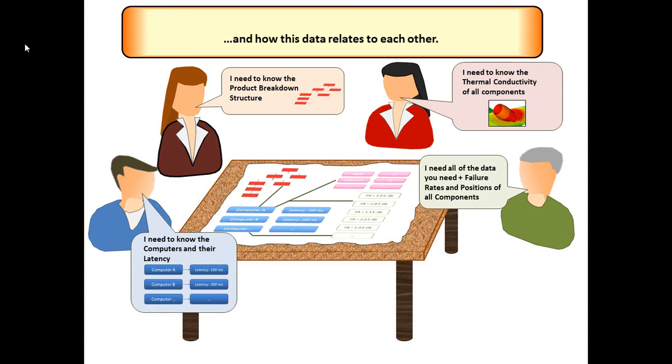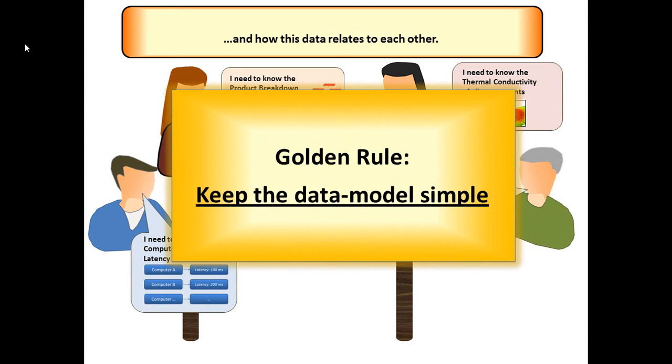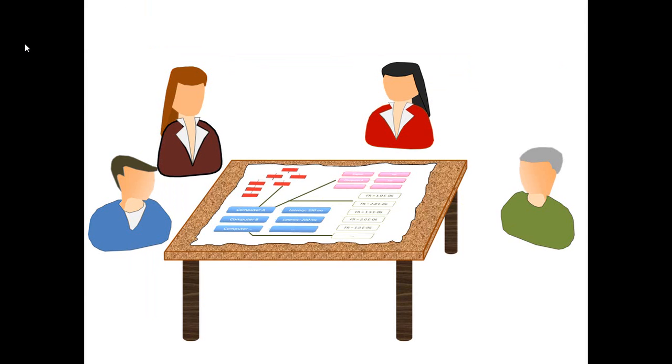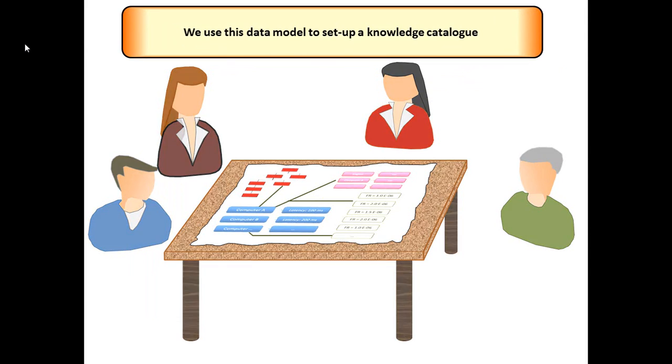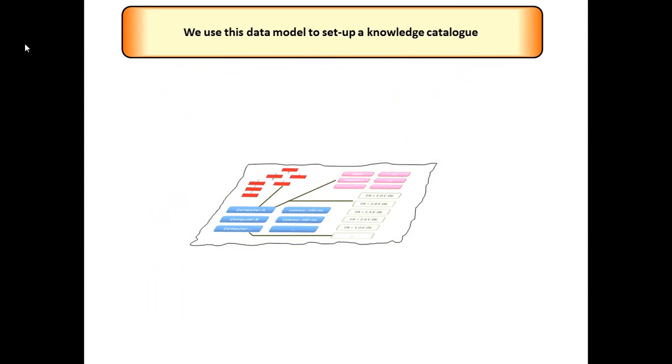Our domain experts also need to agree on how this data relates to each other. Not all information needs to be described, only what is necessary for collaboration so that our resulting data model remains simple. Now that we have a common vocabulary for describing information, we can publish the data to a knowledge catalogue.